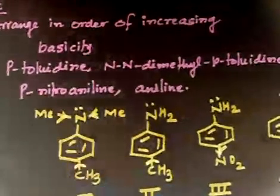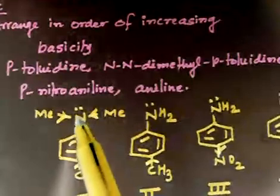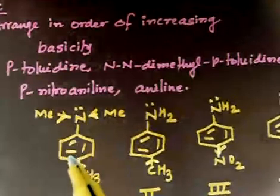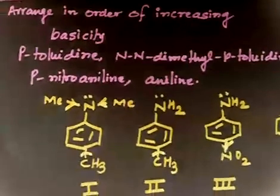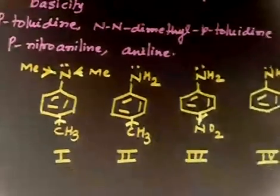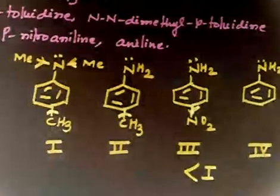These groups show +I effect, and due to steric hindrance, this will have less resonance inside the ring. So the lone pair is most available here. Compound one is the most basic. Now which is next?